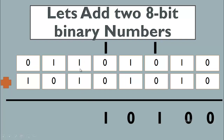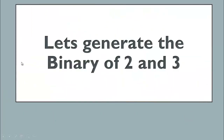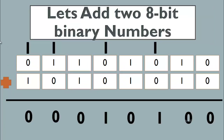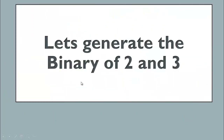Next, one plus one gives zero sum and one carry. Again, one plus one is two — binary of two gives zero sum and one carry. Again, one plus one gives two, so zero sum and one carry. The ninth bit is discarded because we are working with eight-bit binary numbers.